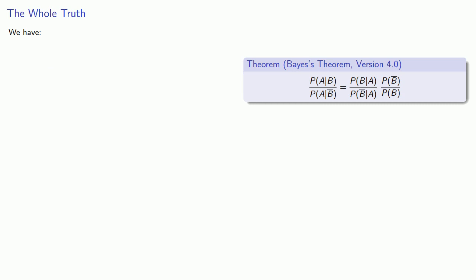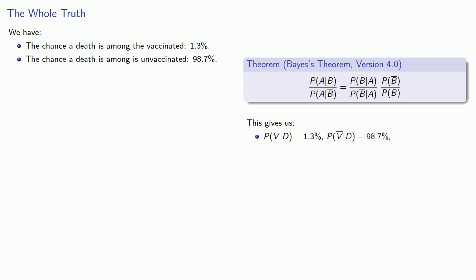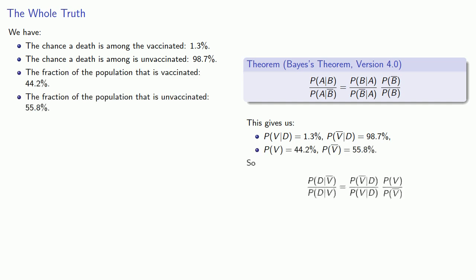And finally, the death rates. The chance that a death is among the vaccinated is 1.3%. The chance that a death is among the unvaccinated is 98.7%. Again, our vaccination rates aren't changed. And we find that the unvaccinated are about 60 times more likely to die.